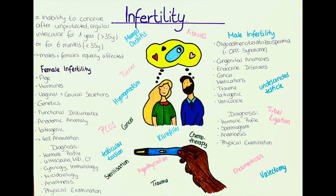Trauma can also lead to infertility — for example, a testicular torsion, which is a medical emergency and can damage the testicles permanently. Other causes include a varicocele, which is basically a varicose vein of the pampiniform plexus. In case of a varicocele, the impaired blood transport in the testicle leads to a rise in temperature in the scrotum, and so decreases sperm production. The last group of causes is iatrogenic infertility, which can be intentional or unintentional — as in a prostatectomy after prostate cancer, or in a vasectomy.